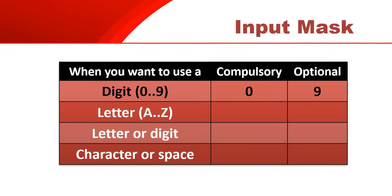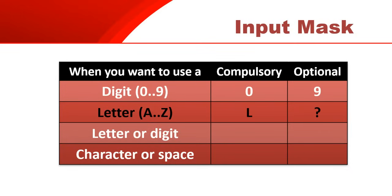If you want a letter to go in a particular place - any letter from A to Z - and it's definitely supposed to be there, you would use the capital L as the compulsory letter code and a question mark if it's optional, which means it could be a letter or it could be blank.